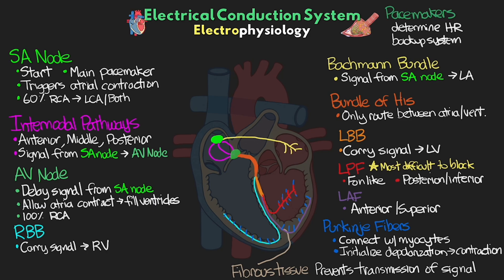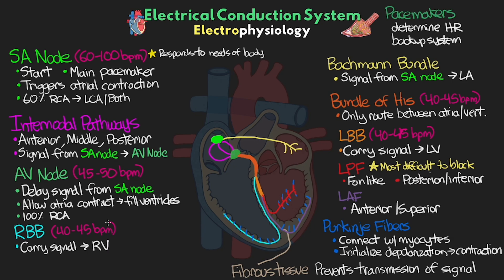The SA node is the primary pacemaker of the heart and has an intrinsic rate of 60 to 100 beats per minute. The SA node also responds and adjusts its rate based on the needs of the body. Next, the AV node has an intrinsic rate of 45 to 50 beats per minute. Then the bundle of His and the bundle branches each have a backup rate of 40 to 45 beats per minute. And finally, the Purkinje cells and the ventricular myocytes themselves have a backup rate of around 20 to 40.